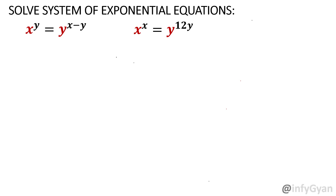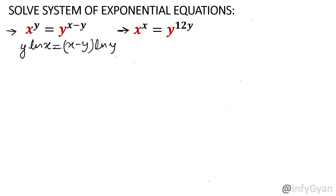Let us take ln of both sides. This is equation 1 and this is equation 2. Taking ln of equation 1 gives y·ln x = (x − y)·ln y. Taking ln of equation 2 gives x·ln x = 12y·ln y.